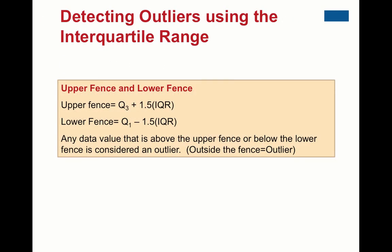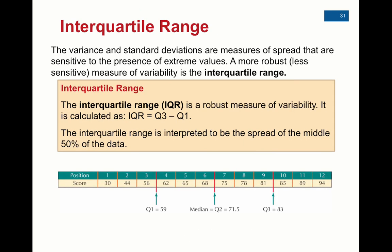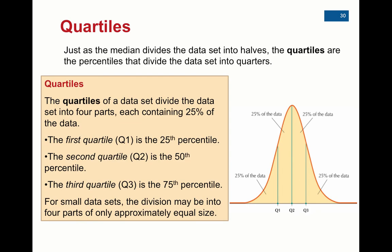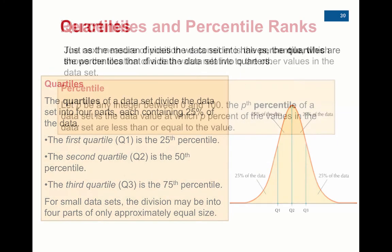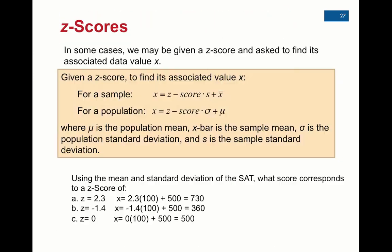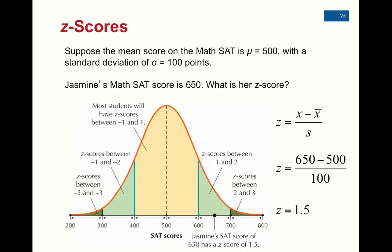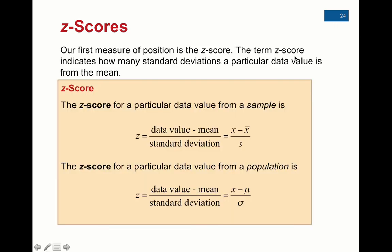That's the end of this section. Remember, z-scores are by far the most important. In this section we'll also be using the interquartile range to determine outliers. Be very familiar with the z-score formula - it's always the data value minus the mean divided by the standard deviation. Understanding that a z-score is how many standard deviations a particular data value is from the mean is going to be asked of you over and over again. We'll see you next time.